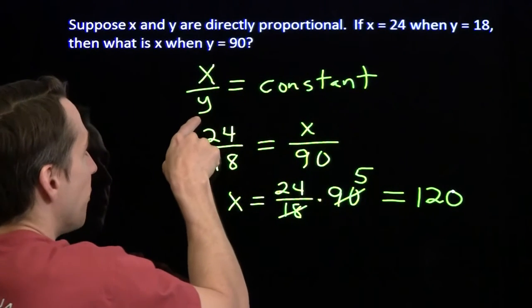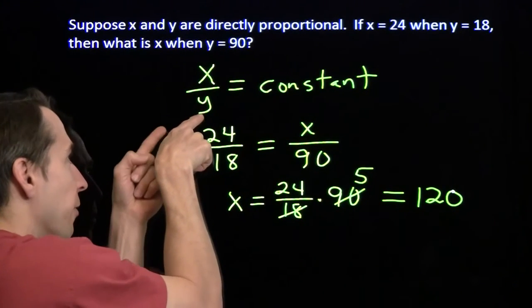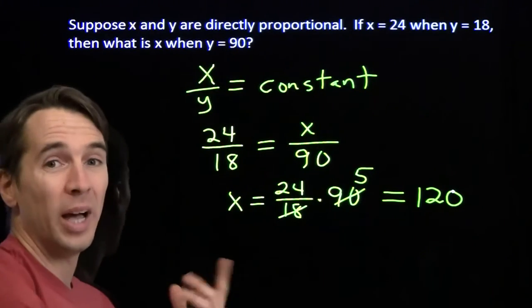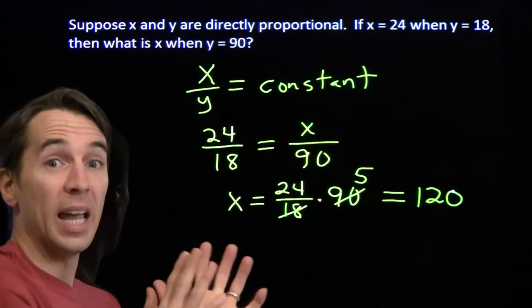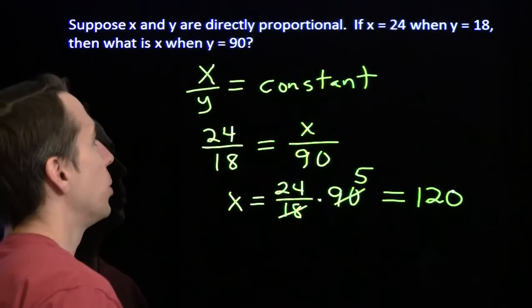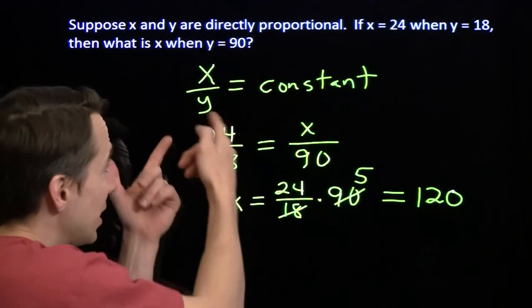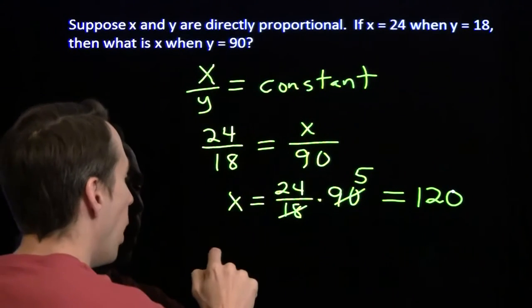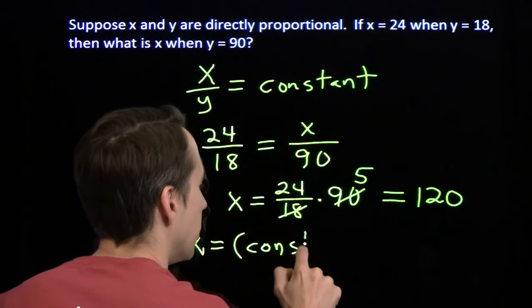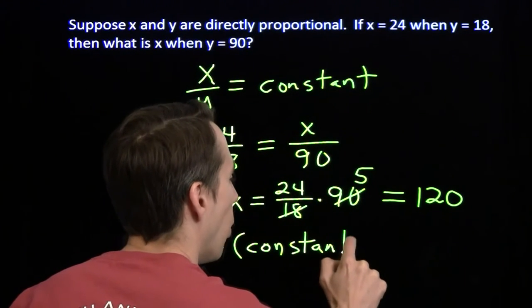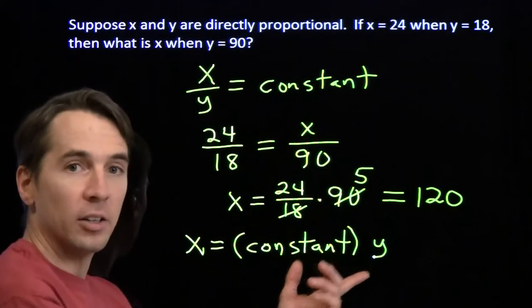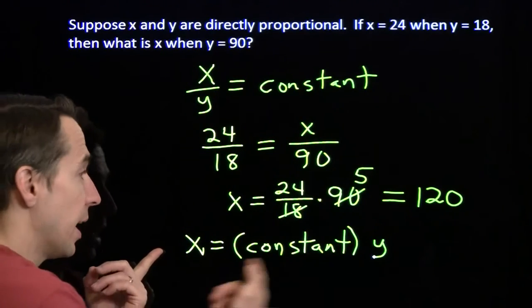And that makes sense just looking at this. If I multiply y by 5 in this fraction, and I have to keep this fraction the same, I better multiply x by 5 as well. If I scale y up by any factor, I have to scale x up by that same factor in order to keep the ratio constant. Another way to see that is to multiply both sides by y: we can write this as x equals some constant times y. So if I multiply y by any factor, I have to do the same thing to x.